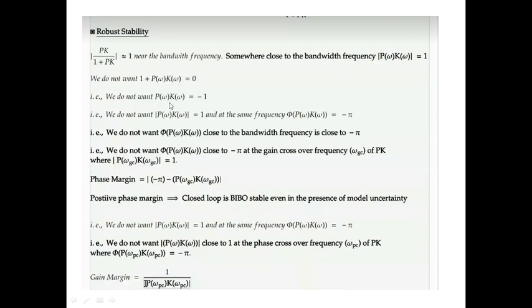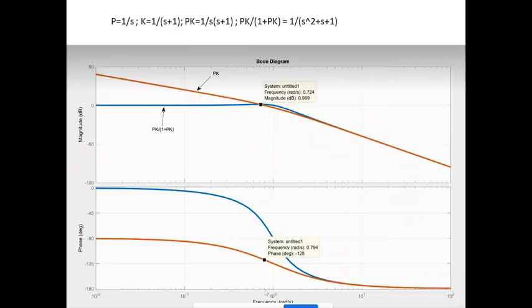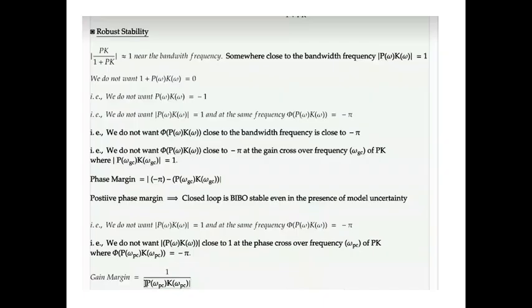Hence we don't want P(ω)K(ω) to be -1. In terms of complex representation, we don't want the magnitude of P(ω)K(ω) to be one and the phase to be -π at the same time. To do this, we need to plot PK in both magnitude and phase.